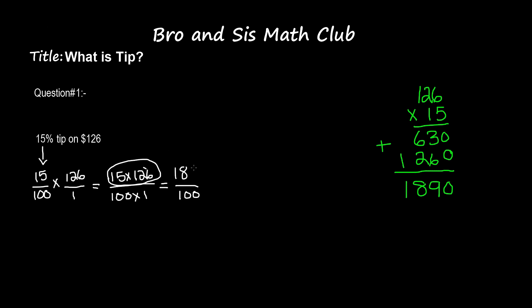So 630 plus 1260 is going to give us 1890. That is going to be our numerator, so 1890. Now what we need to do is divide. We take 1890 and we take the decimal point because this is an easier method to divide. We take the decimal point and we move it two spaces to the left.